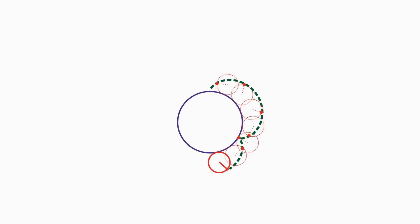With a 3 to 1 ratio, we get an epicycloid with 3 lobes, called an epicycloid of Cremona.